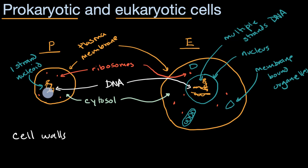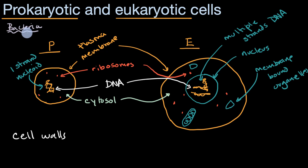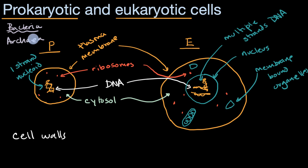What are examples of prokaryotic cells? Generally speaking, if we're talking about prokaryotic cells, we are talking about bacteria, which you might be familiar with — we have good and bad bacteria that are constantly interacting with our bodies. You also have another type of organism called archaea, which are also prokaryotes.